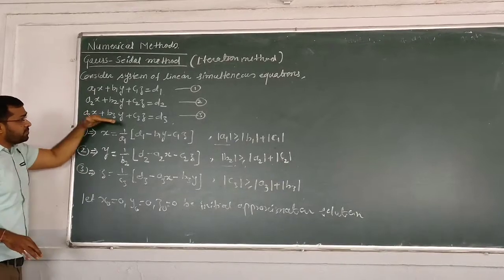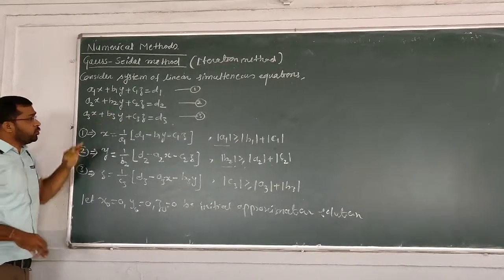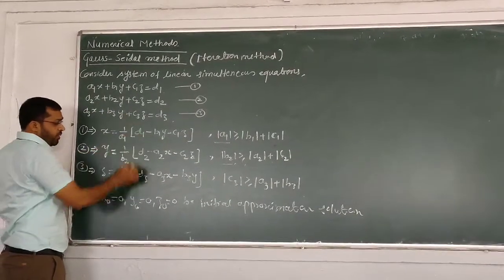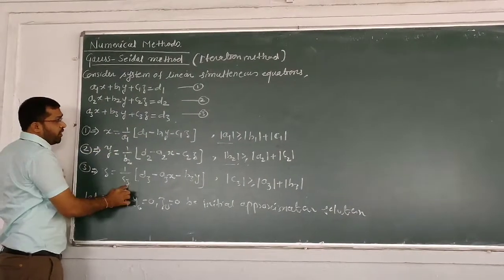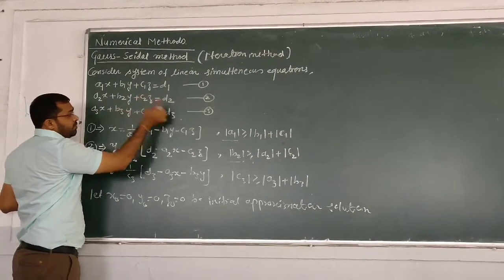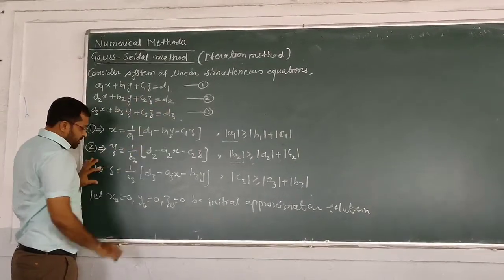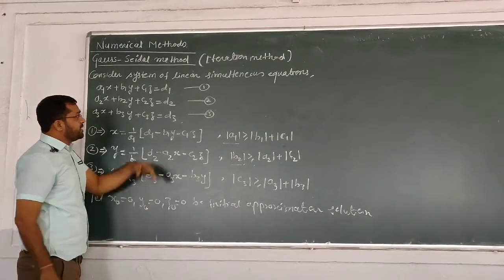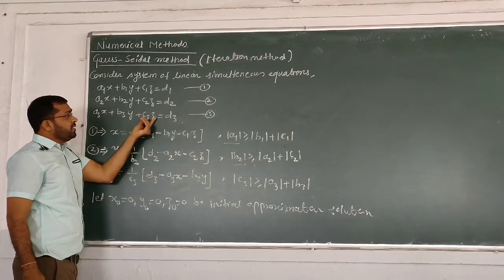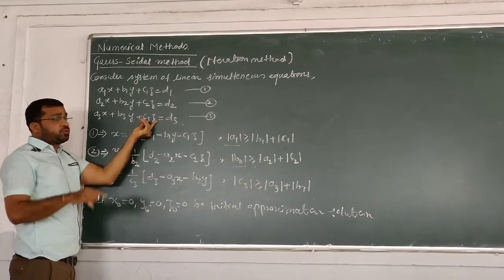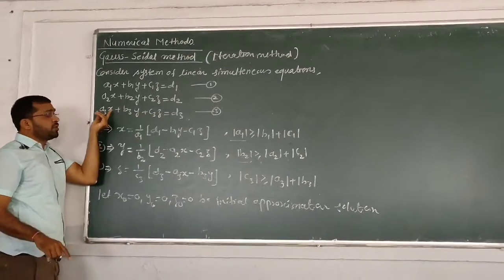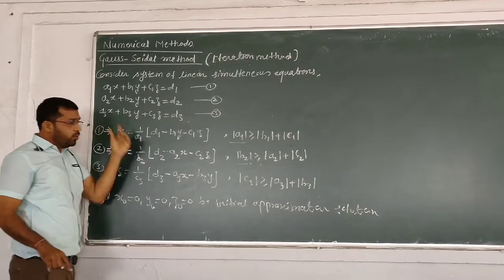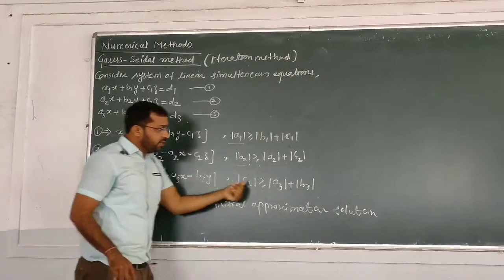The third equation is used to find z. We express z = (1/c3)(RHS − a3·x − b3·y). Again, the condition is that the coefficient of z must be greater than or equal to the sum of the moduli of the coefficients of x and y.